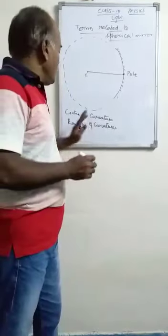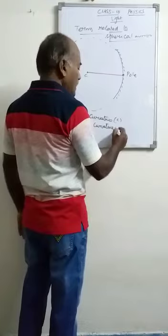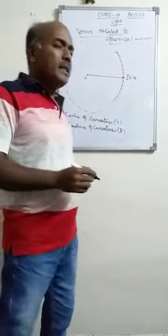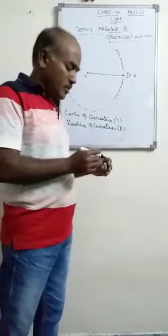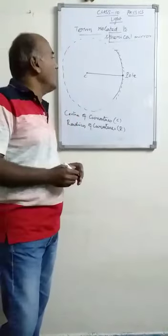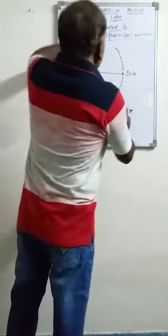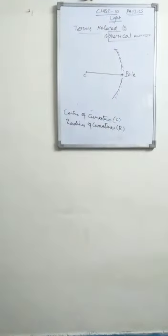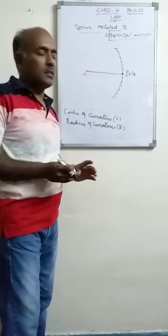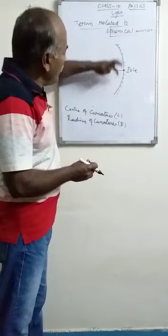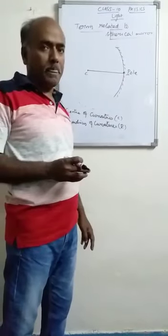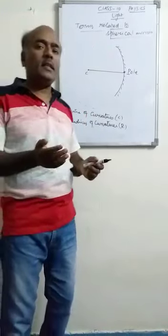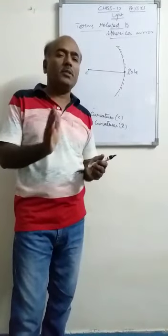Other than these three terms — center of curvature represented by C, radius of curvature represented by R, pole represented by P — there are so many terms related to this mirror. For that, I take this concave mirror only. This is the concave mirror, which has the reflecting part up to only this portion. If we see that concave mirror, it is just like a tennis ball which is cut from one side.